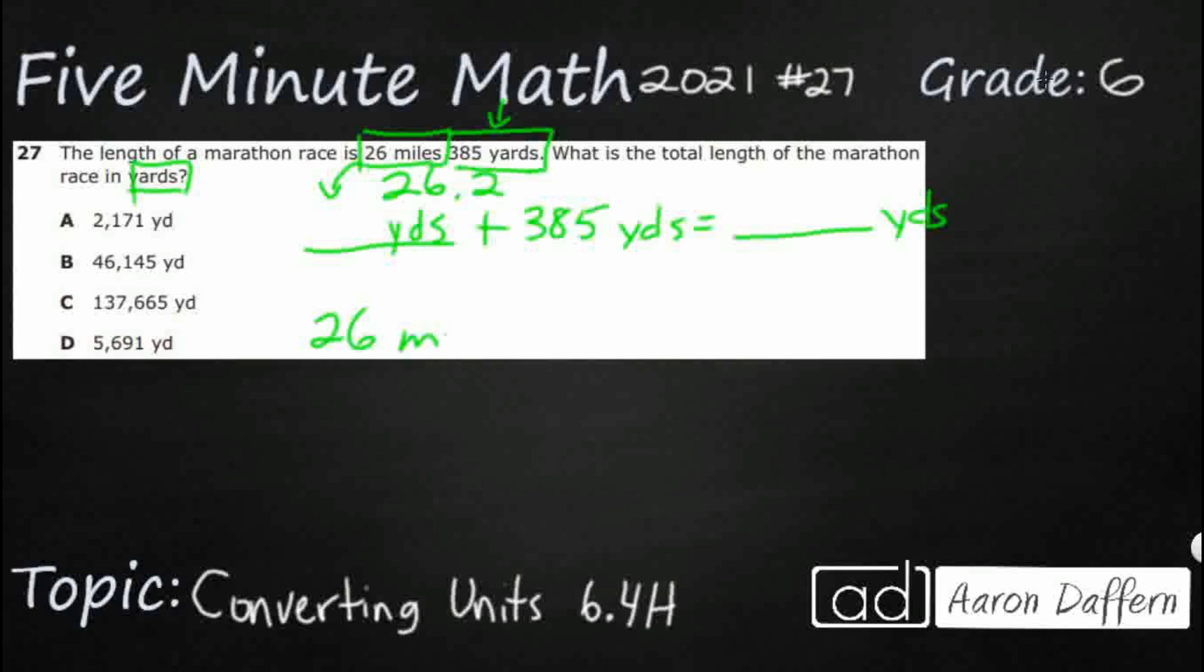So 26 miles equals how many yards? Well, in order to do that, we need to know what's the conversion between miles and yards. And if you look on your mathematics chart, the formula chart at the front of your STAR test, the one that's got the rulers on either edge, you're going to see that one mile equals 1760 yards.